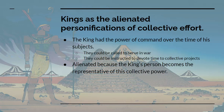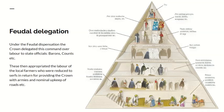Kings are, or were, the alienated personification of collective effort — because the king had the power to command the time of his subjects. At least they could be made to serve in time of war, and in time of peace they could be instructed to devote their time to collective projects. I say alienated because the king's person becomes the representative of this collective power — so you have the pyramid of Cheops, you have Hadrian's Wall, despite the fact that neither Cheops nor Hadrian laid the bricks.